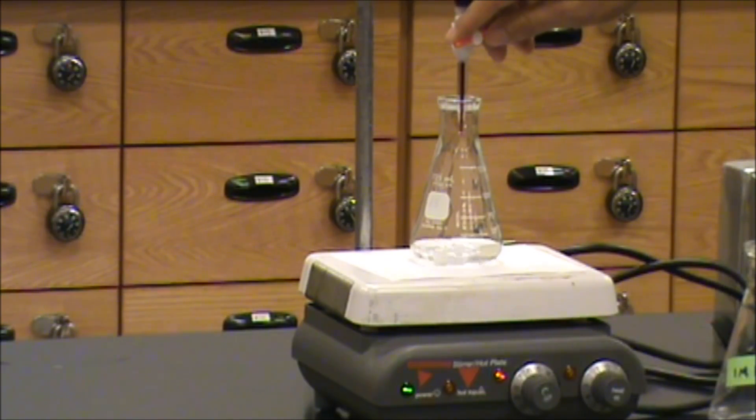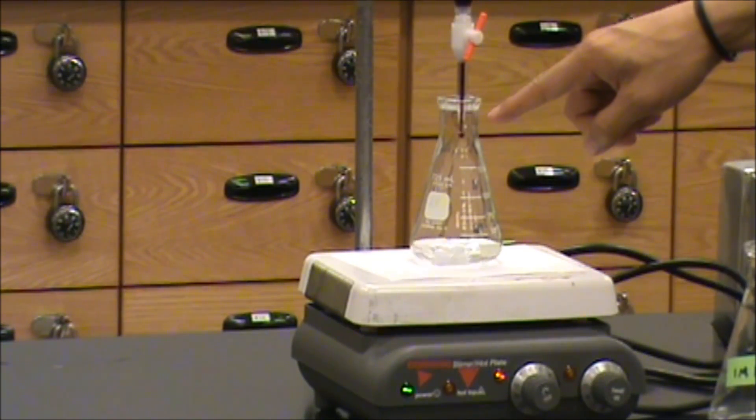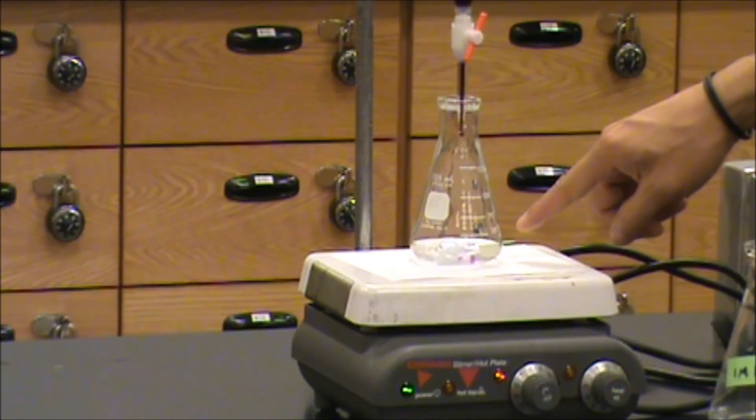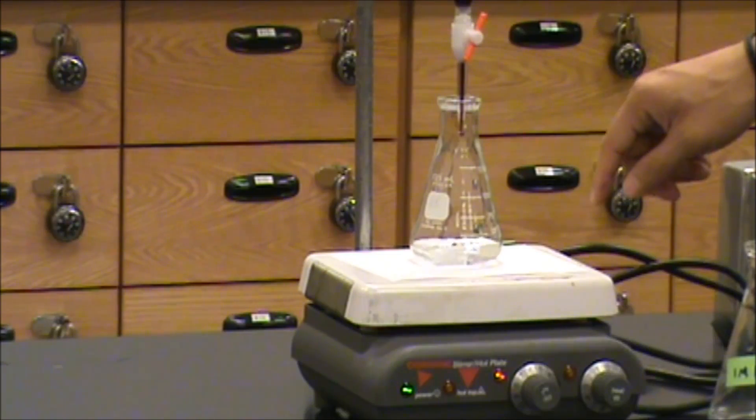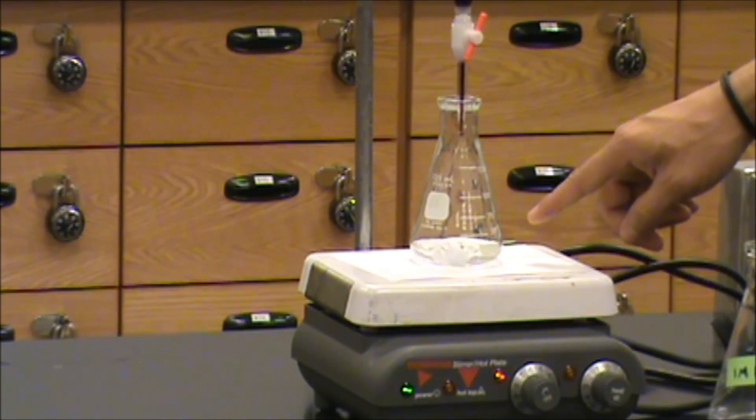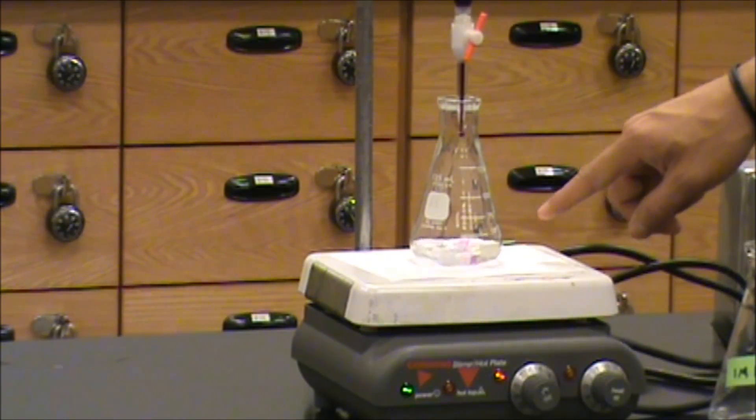I'm now going to turn the stopcock to begin addition of the titrant. And what you'll note is that the purple color rapidly dissipates upon hitting the solution as it reacts with the peroxide. You may also be able to see bubbles of oxygen forming as oxygen is one of the products of this reaction.